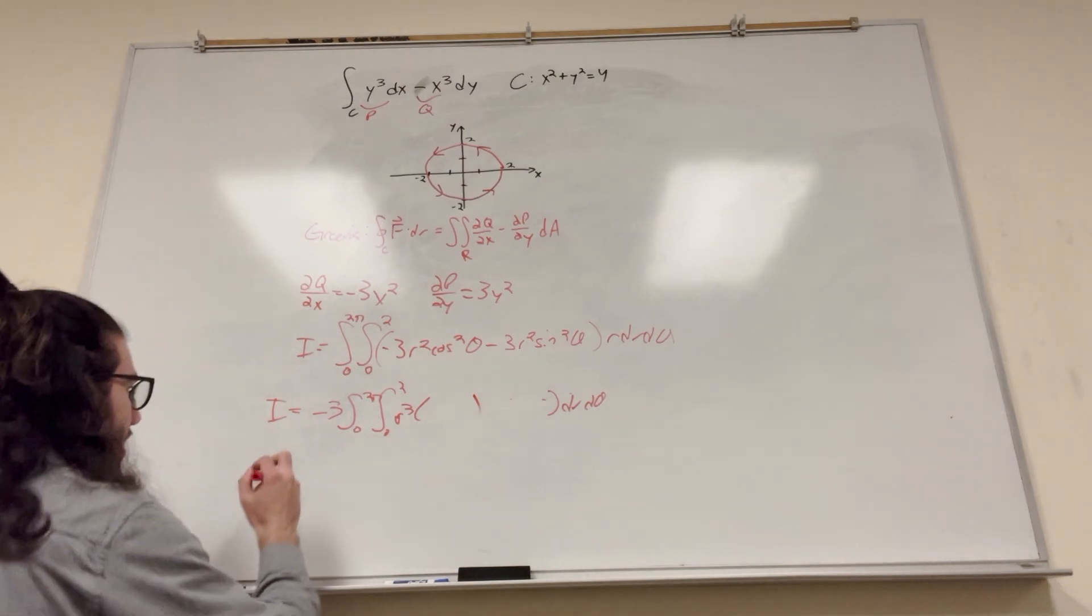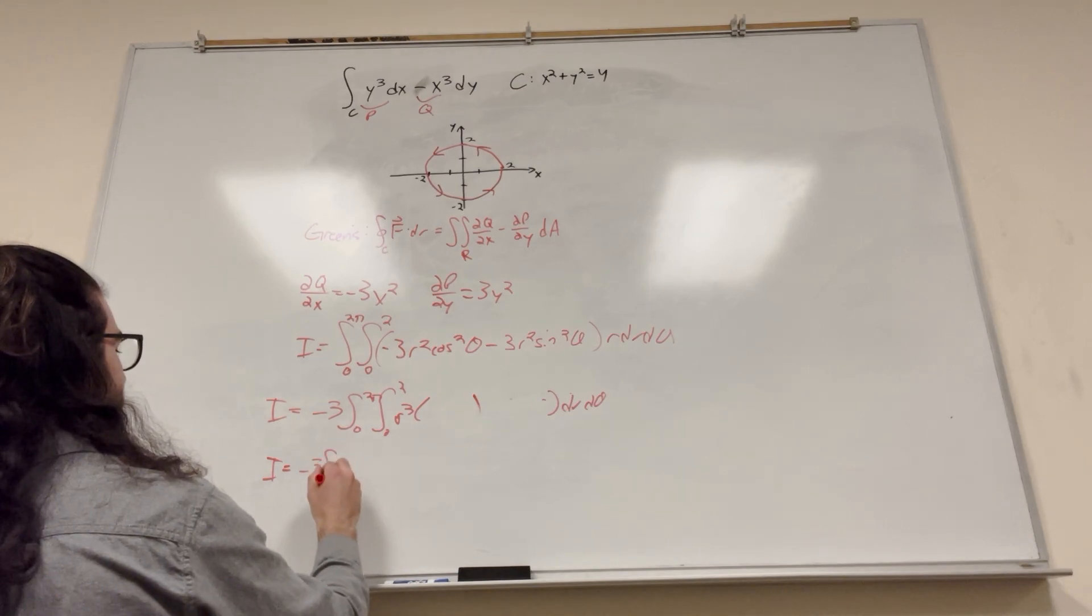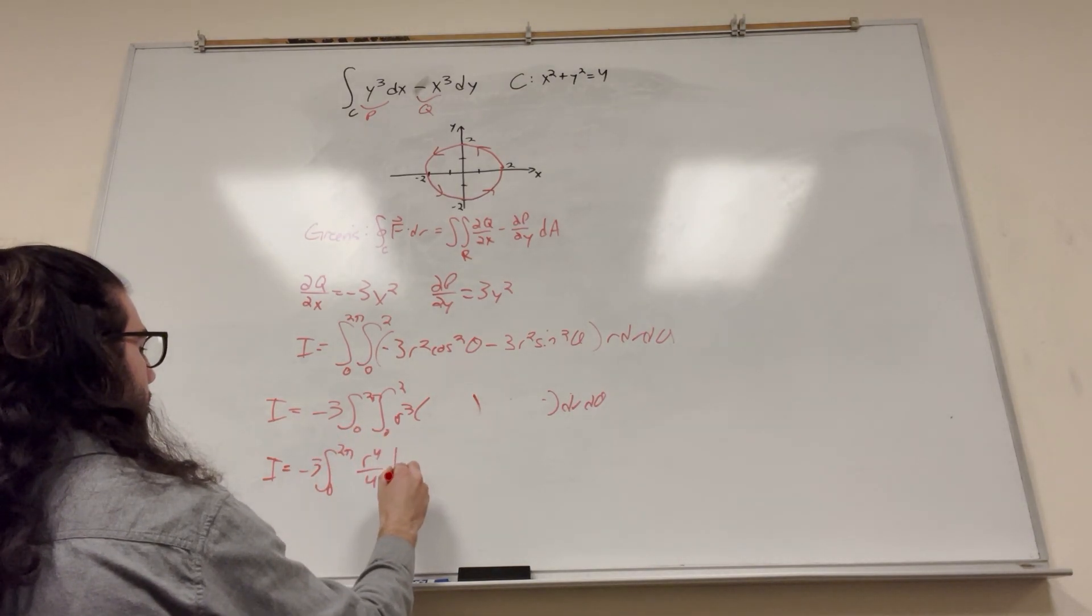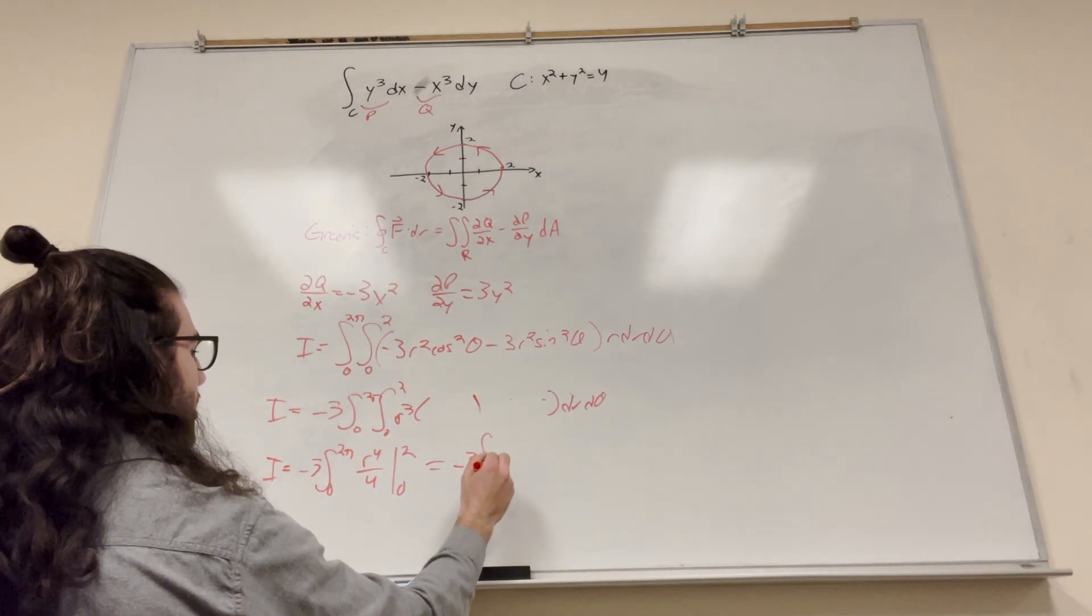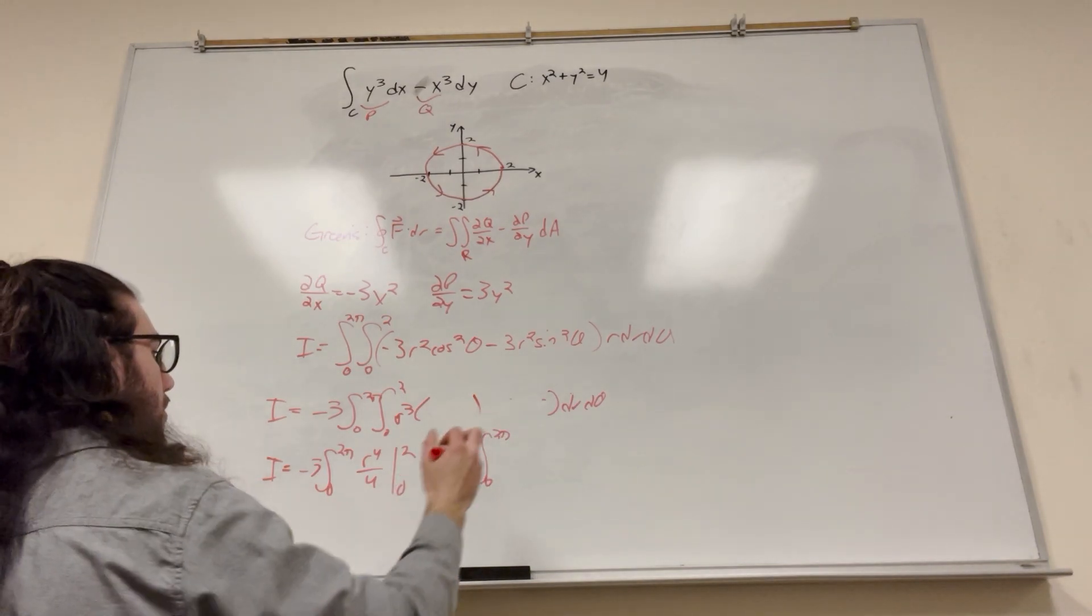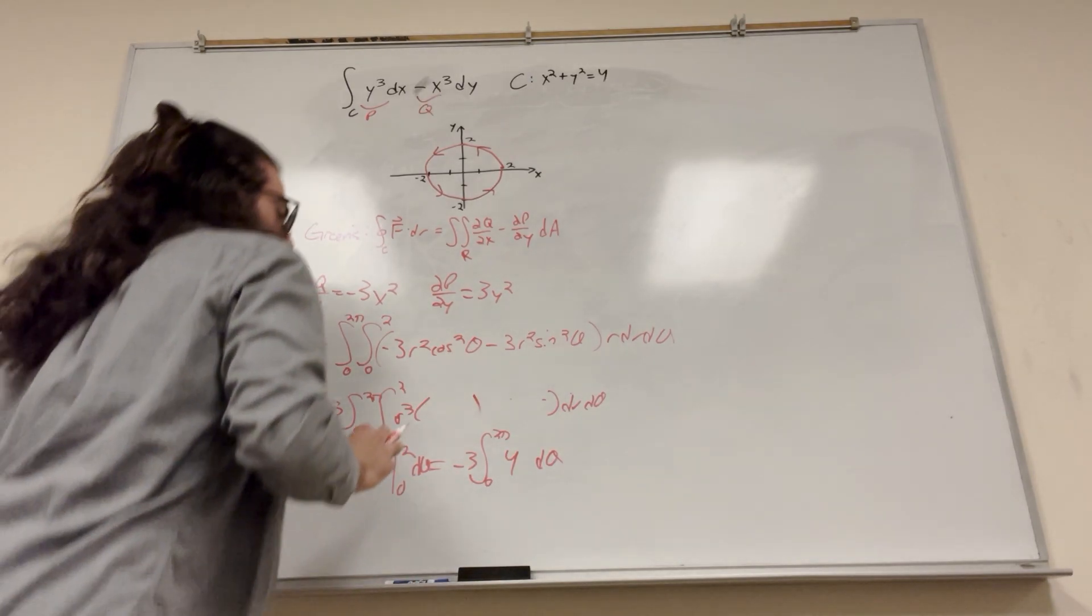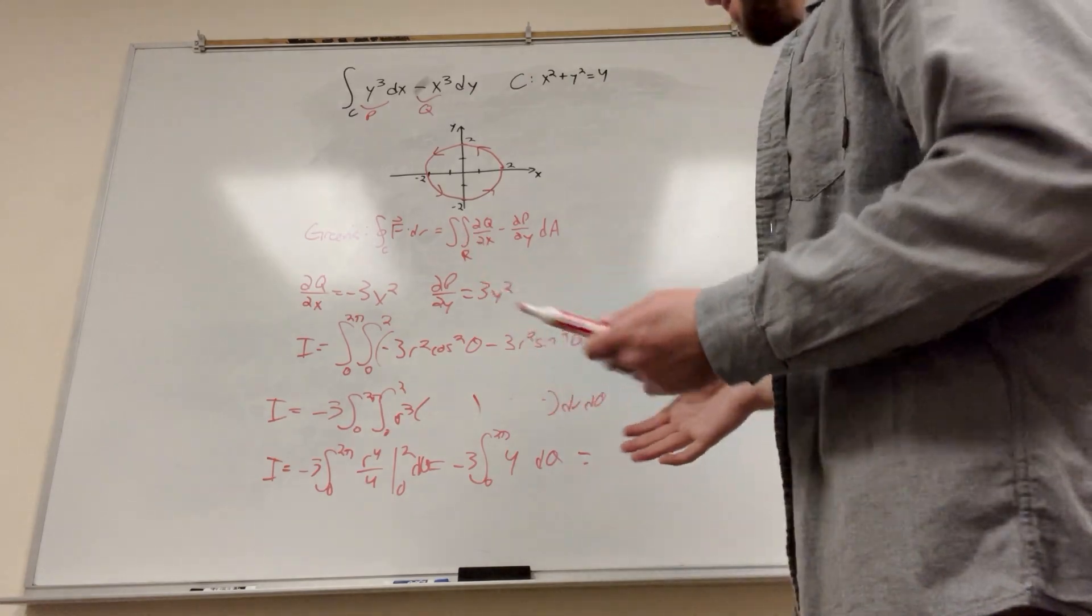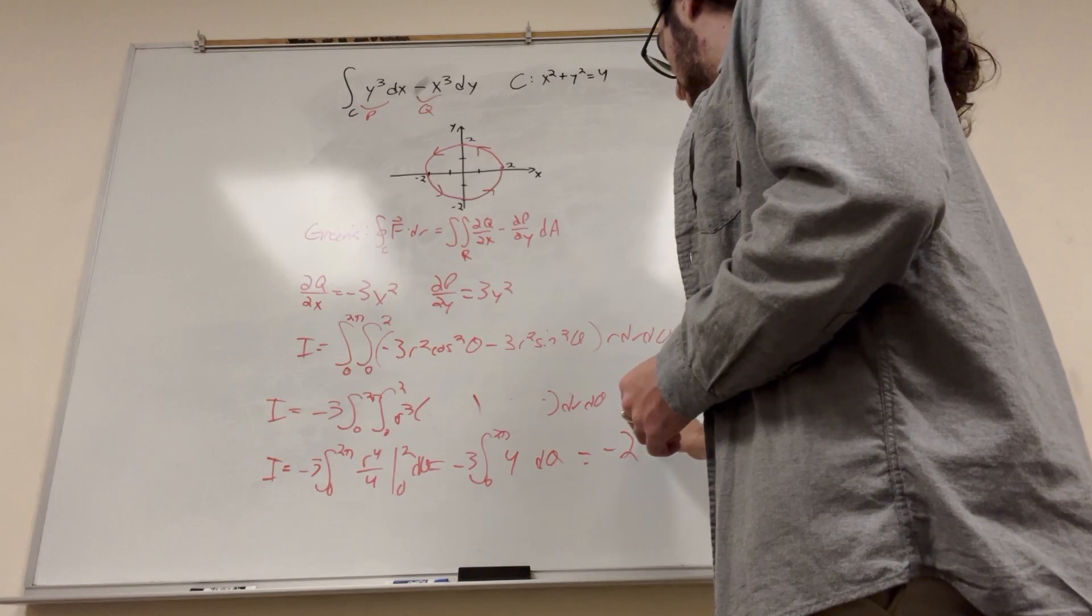Let's solve it. So it's going to be negative 3, 0 to 2π, and that's going to be r to the 4th over 4 from 0 to 2, which equals negative 3, the integral from 0 to 2π. So 2 to the 4th, 16 over 4, so it's going to be 4 dθ. Then you know what you can do from here. That negative 2 is going to come down because there's nothing else for theta, so it's going to be 8π times negative 3, so it equals negative 24π.